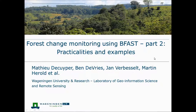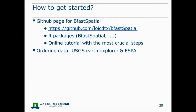Thank you Jan for the introduction. In this part I will go over some of the processing steps and other practicalities for applying BFAST, and I will end with some examples of case studies we have done within our group at Wageningen University. There is a GitHub page on BFAST Spatial which has a nice overview of the most crucial steps that enable you to run BFAST. There is also a small dataset you can download and test yourself, and links to the R packages you need, such as BFAST Spatial itself and other preprocessing R packages.